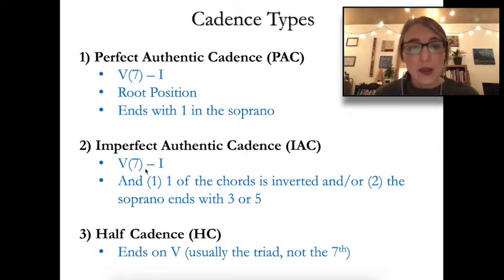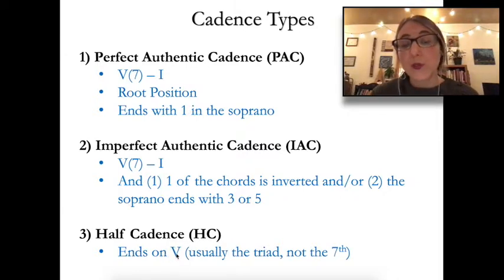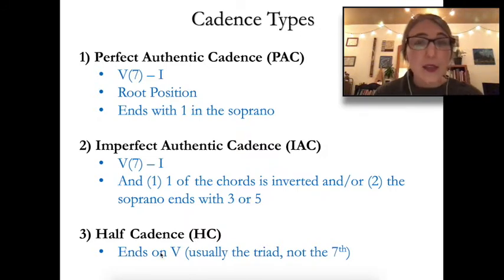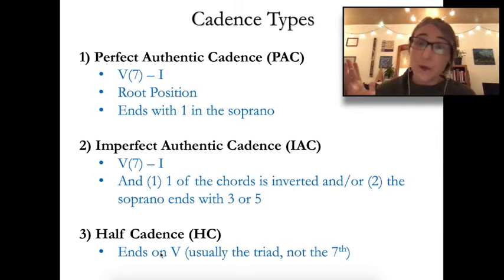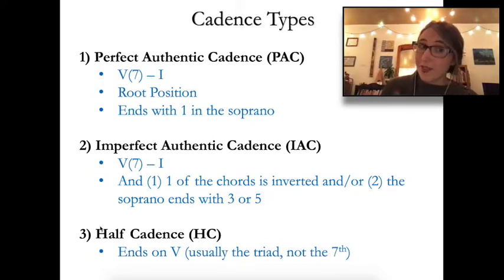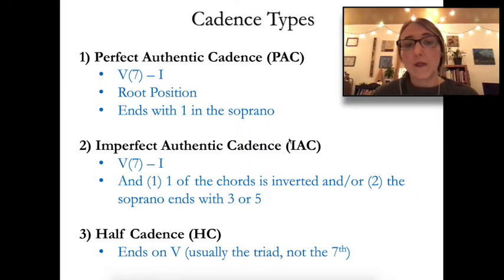The Half Cadence ends with a five chord, and typically this five chord is a root-position triad specifically. We don't tend to see a five-seven or an inverted five-six. Anything can come before it — a four, a one, a three — but it needs to end on five. The Perfect Authentic Cadence is the most conclusive, the Half Cadence is the most inconclusive, and the IAC can vary depending on how much is weakened.